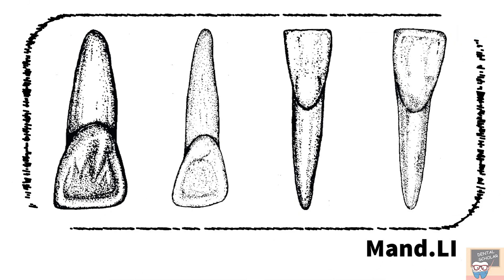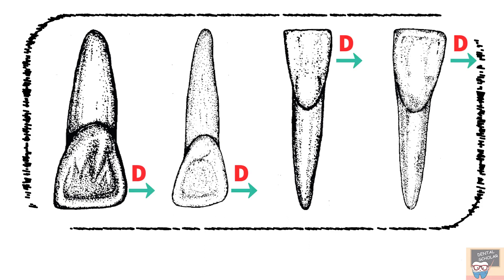Now to identify the quadrant, simply identify the distal side and its direction would indicate the quadrant. If the distal side is towards your right, then it's a right quadrant, and if it's towards your left, then it's a left quadrant.